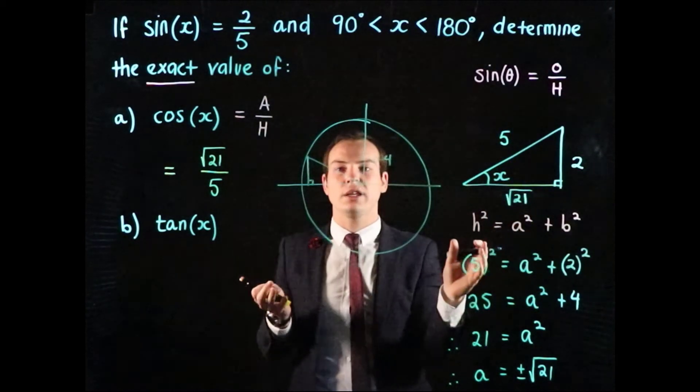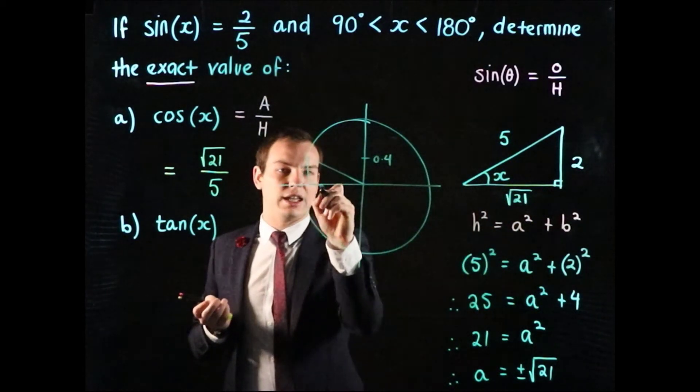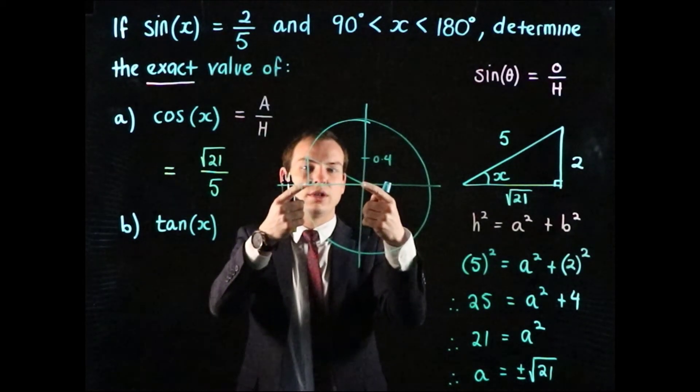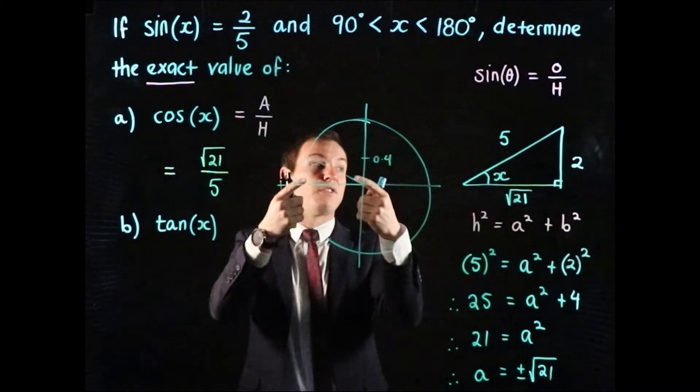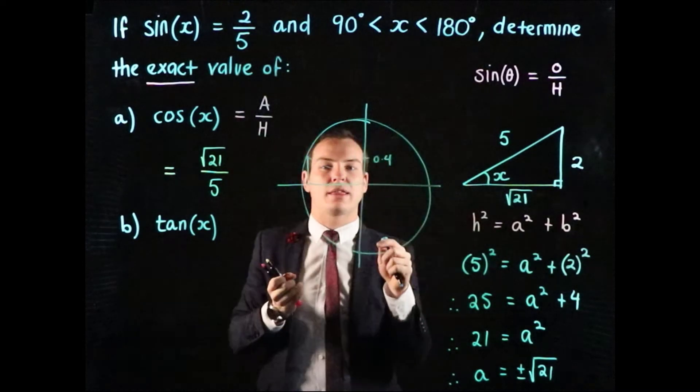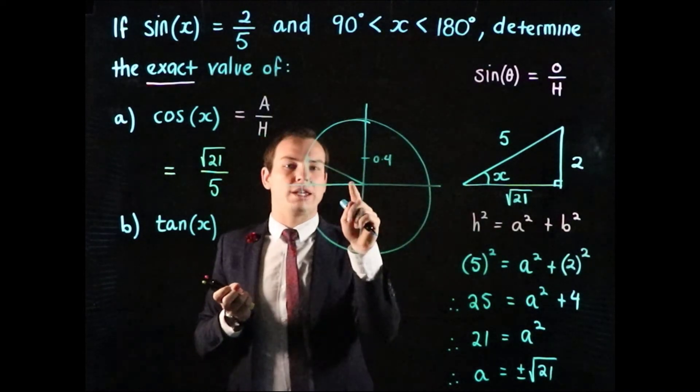The right angle triangle here is the one we've drawn out in this side of our working. It doesn't matter that they're oriented slightly differently. This will still have a length of the square root of 21 for the cosine value, or square root 21 over 5 once we scale back that hypotenuse to be a 1.